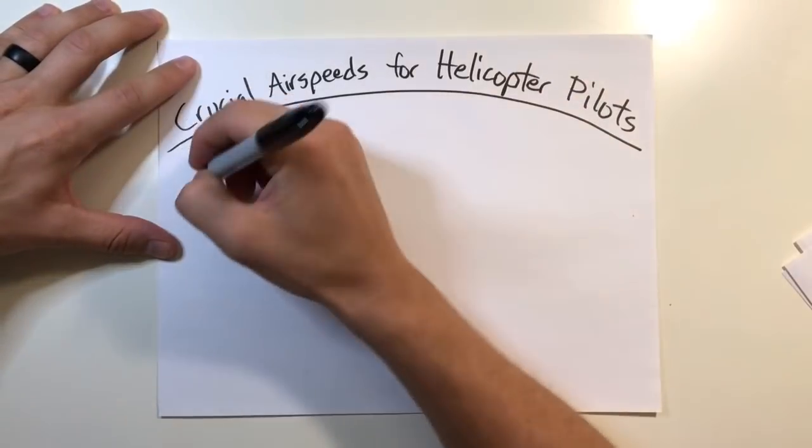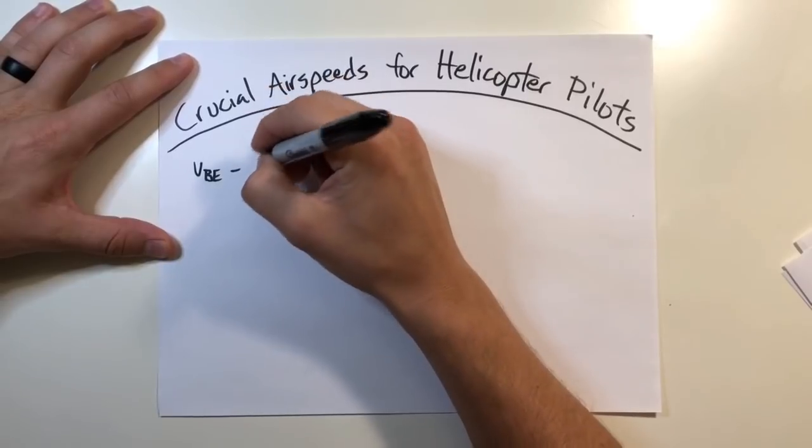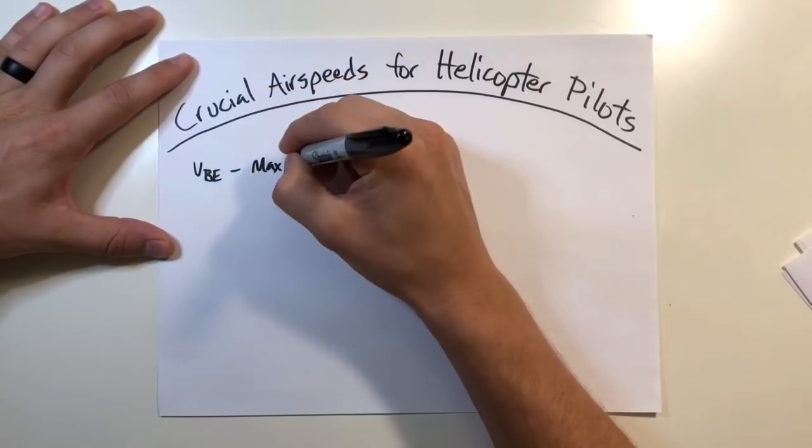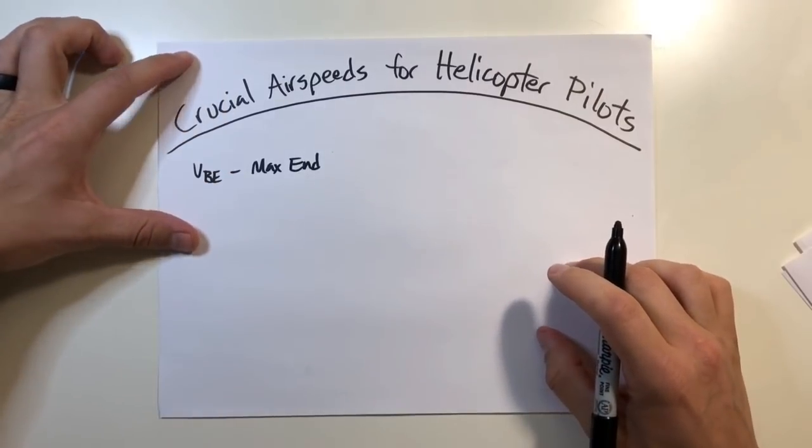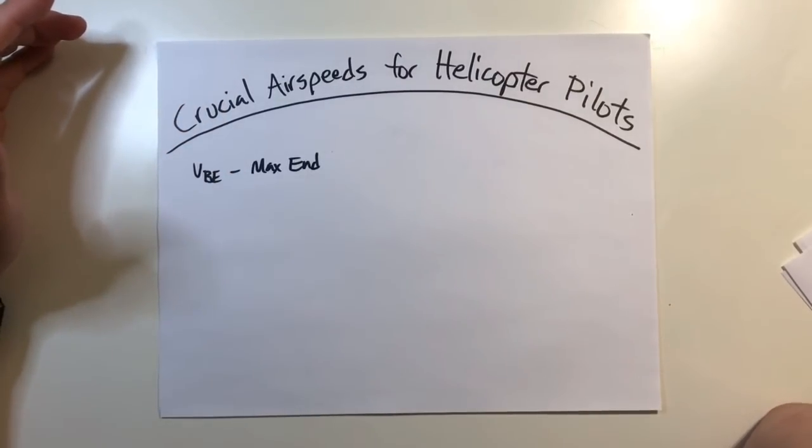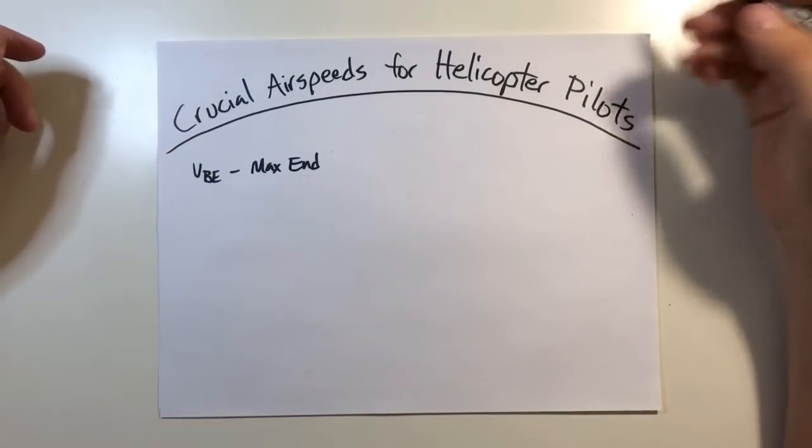The first I'd like to highlight is VBE. This stands for Velocity Best Endurance, also commonly referred to as your Maximum Endurance or Max Endurance Airspeed. This is important because it gives you the greatest airborne time per unit of fuel consumed.